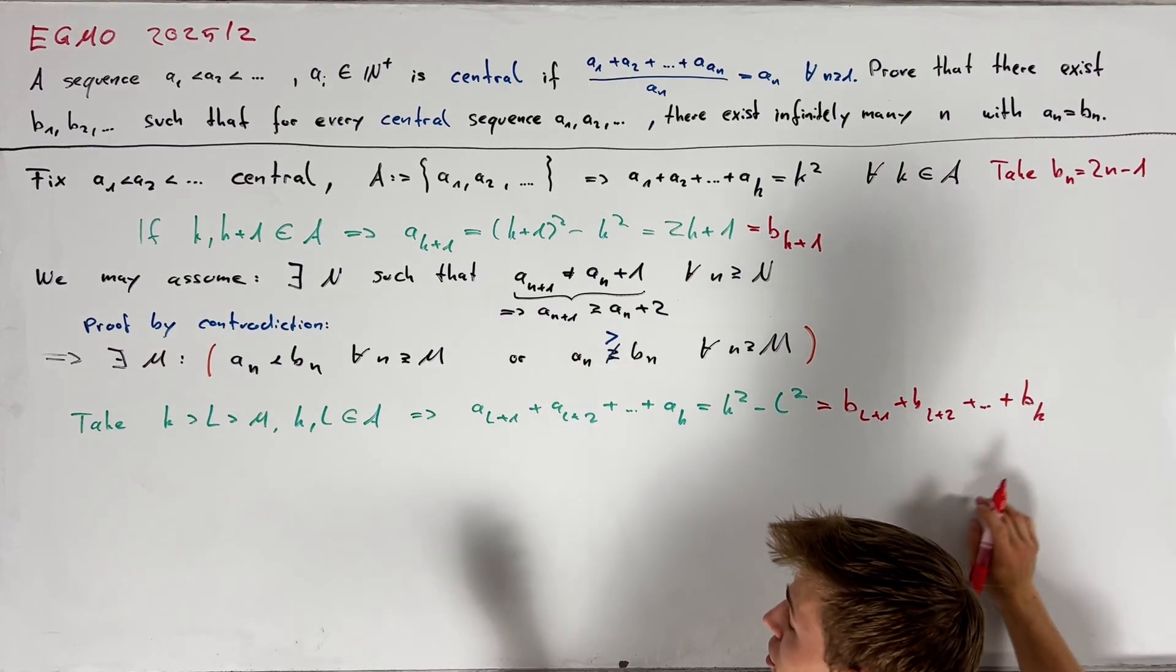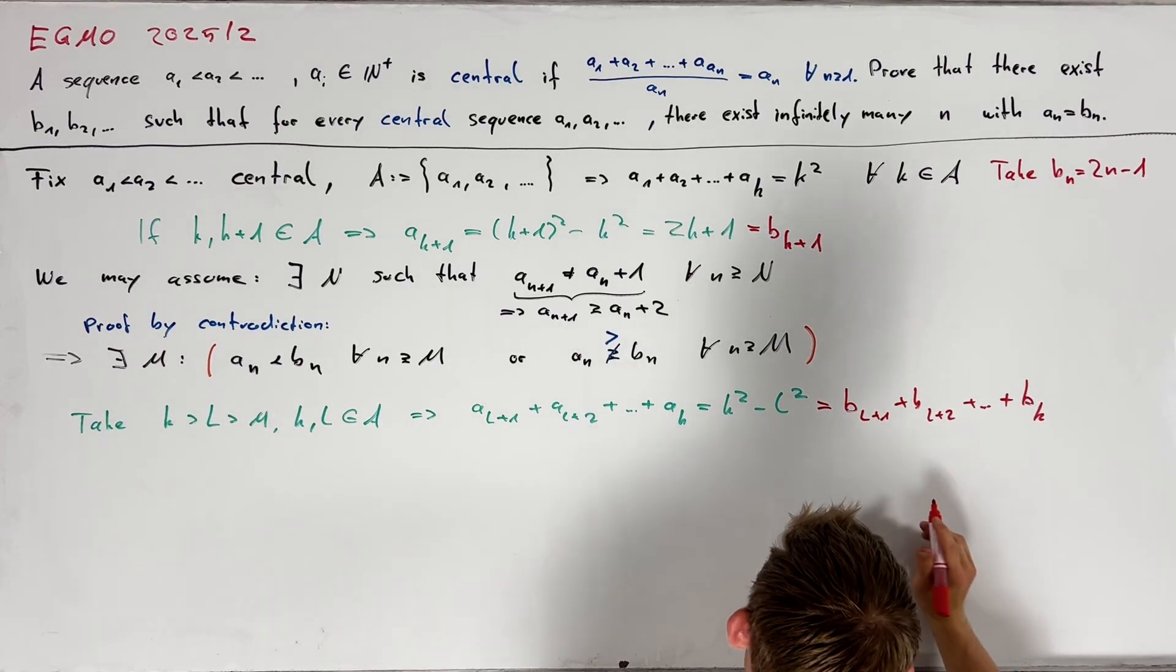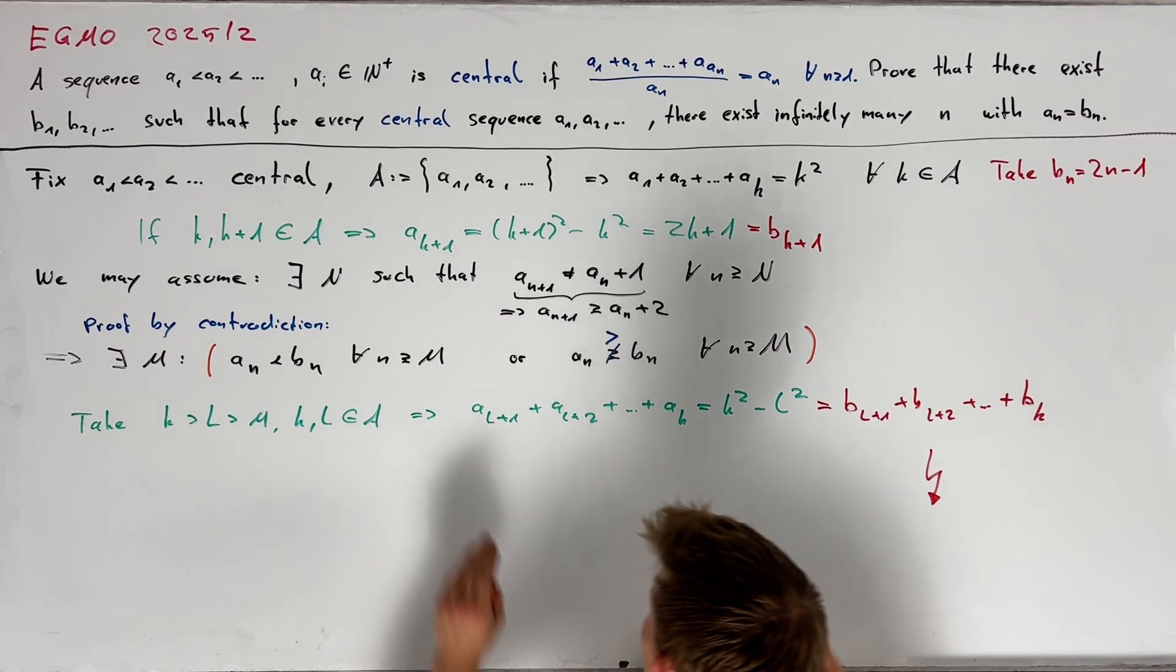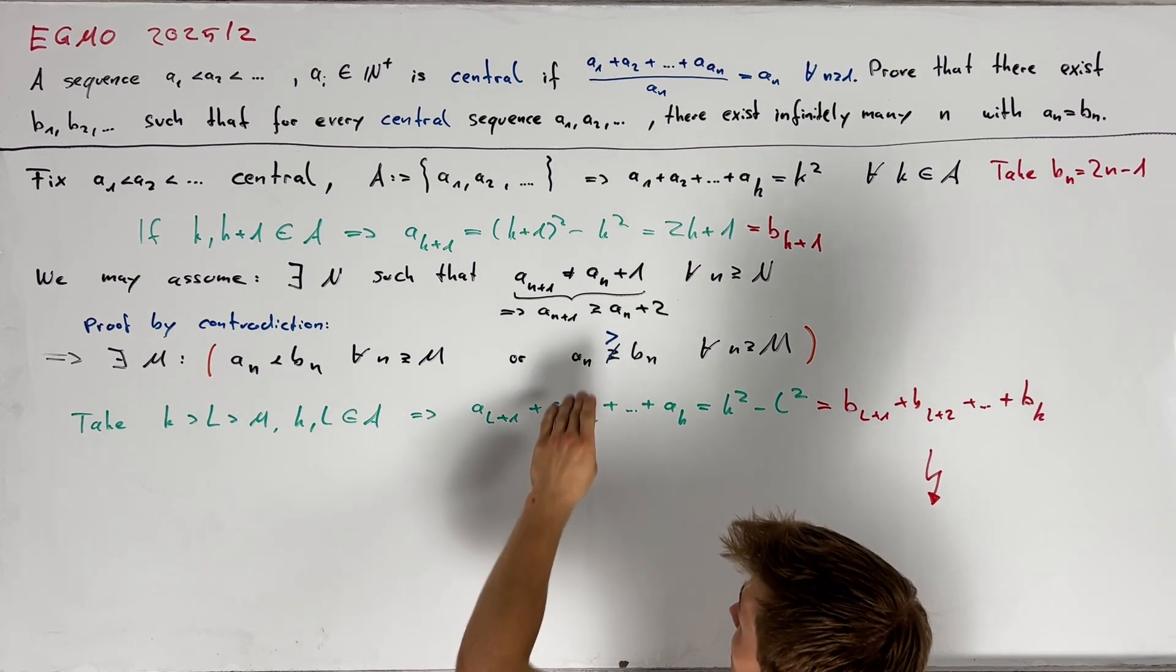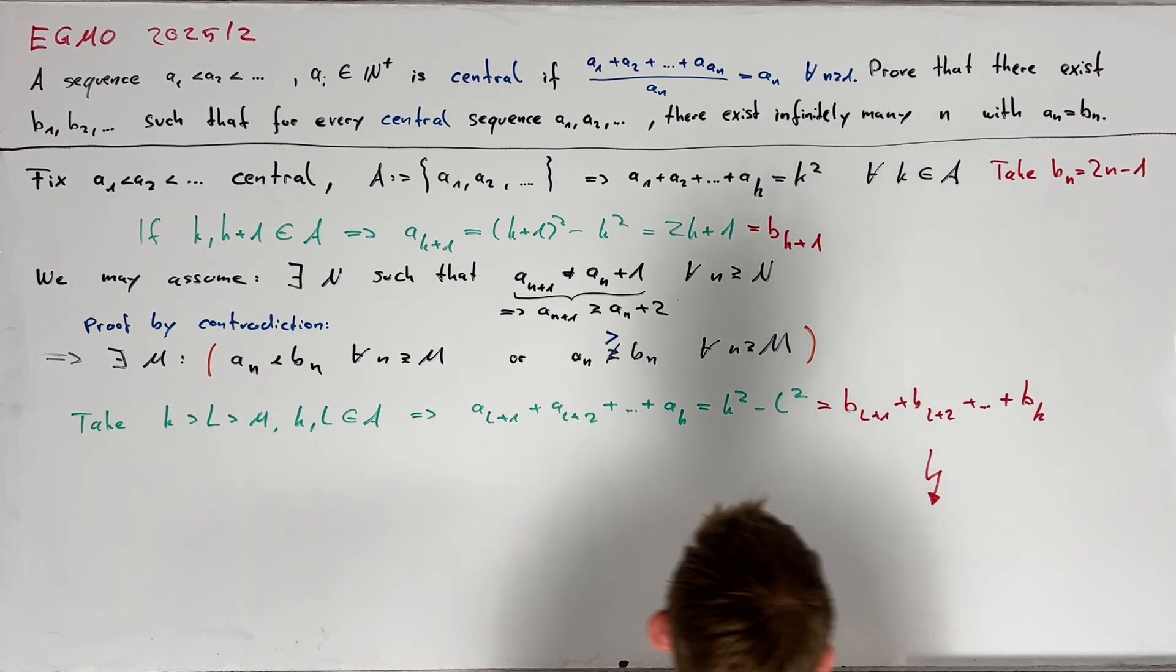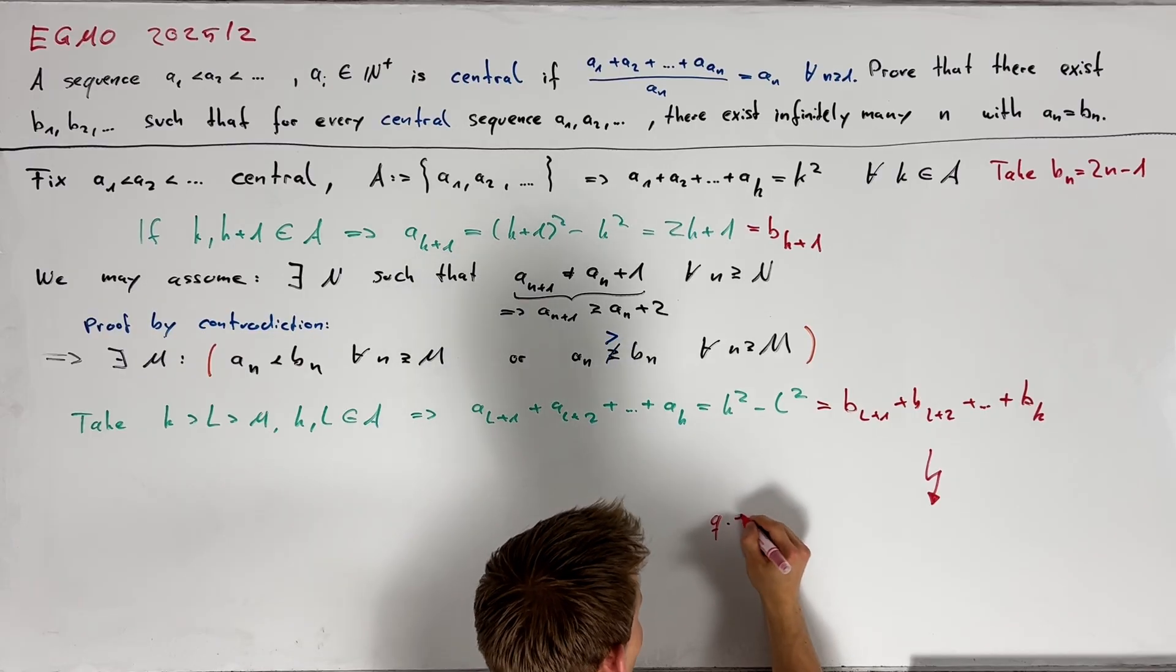Hence our assumption was wrong and therefore we can indeed find infinitely many n such that an is equal to bn and thus we are done.